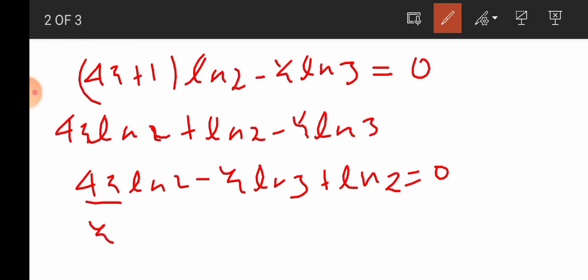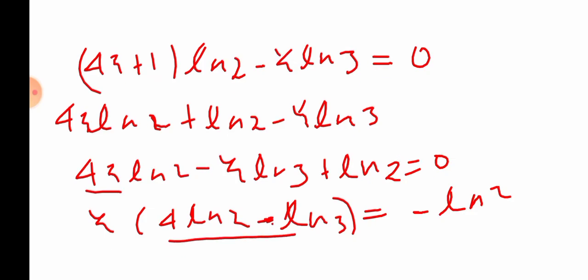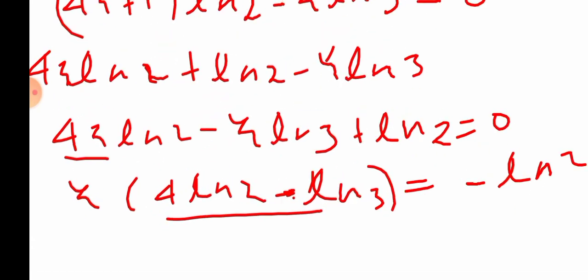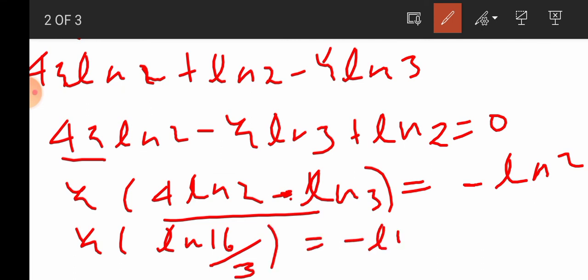Factor out y: y times (4 ln 2 minus ln 3) plus ln 2 equals 0. This means y times (4 ln 2 minus ln 3) equals minus ln 2. This can be written as y times ln(16/3) equals minus ln 2.